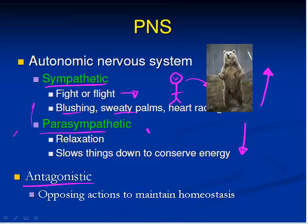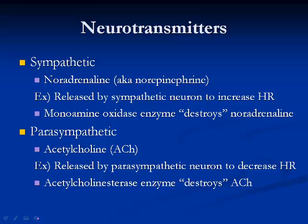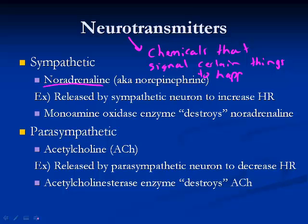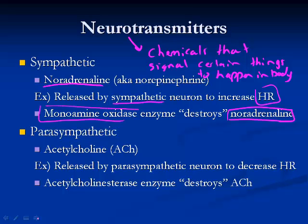Now let's look at the neurotransmitters that control these systems. The sympathetic nervous system uses a neurotransmitter called noradrenaline, also known as norepinephrine. Neurotransmitters are chemicals that signal certain things to happen in the body. Noradrenaline is released by sympathetic neurons to increase heart rate during fight-or-flight. To break it down once we're done with that response, an enzyme called monoamine oxidase breaks down the noradrenaline so we start calming down.